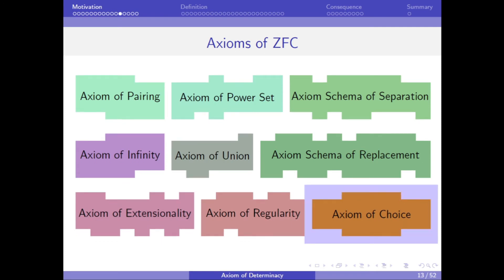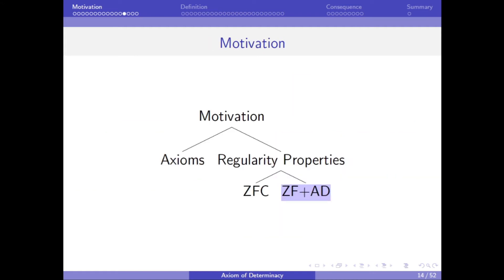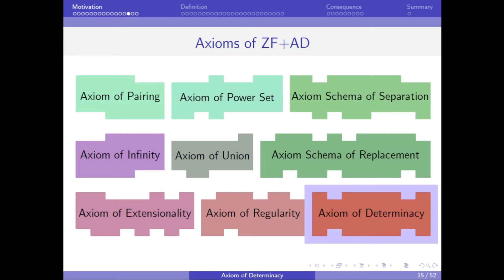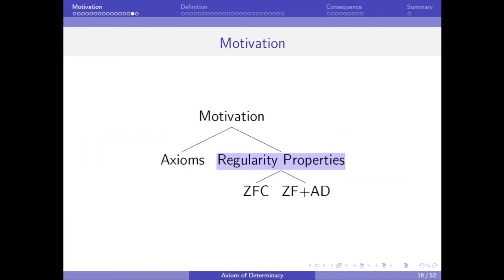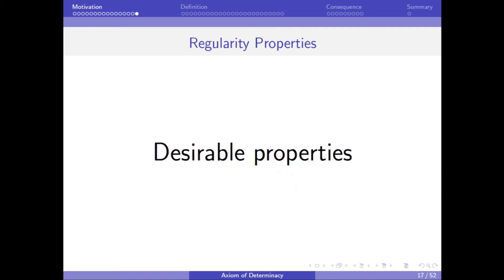But one of these assumptions, namely the axiom of choice, is somewhat controversial, which provides one reason to discuss an alteration to ZFC called ZF plus AD, which has the same assumptions as ZFC, except we replace the axiom of choice with the axiom of determinacy. Because they make different assumptions, we can prove different properties about sets in ZFC and ZF plus AD. In particular, in ZF plus AD, all sets of a certain type have properties called regularity properties. And these regularity properties might be thought of as desirable properties.